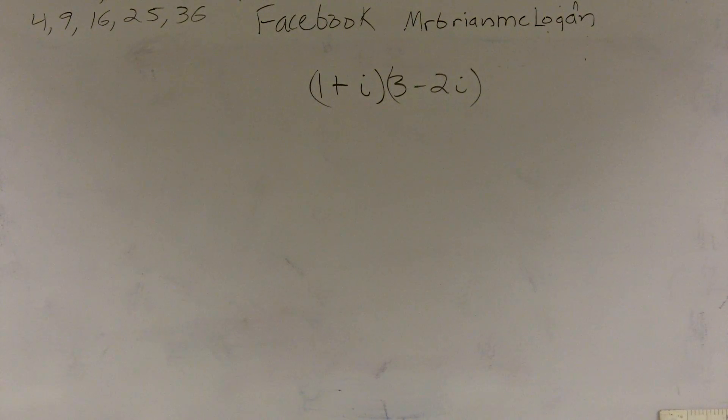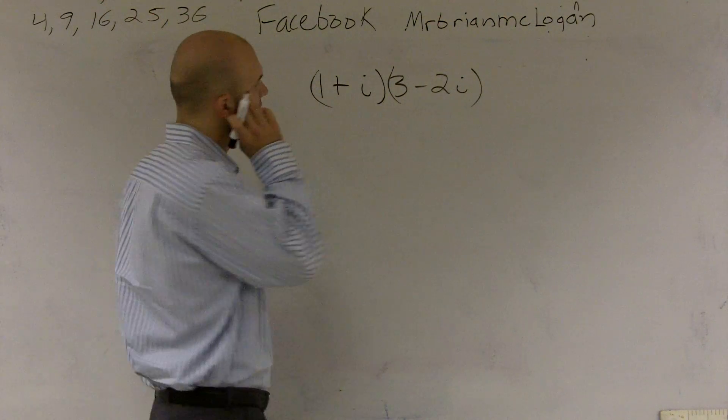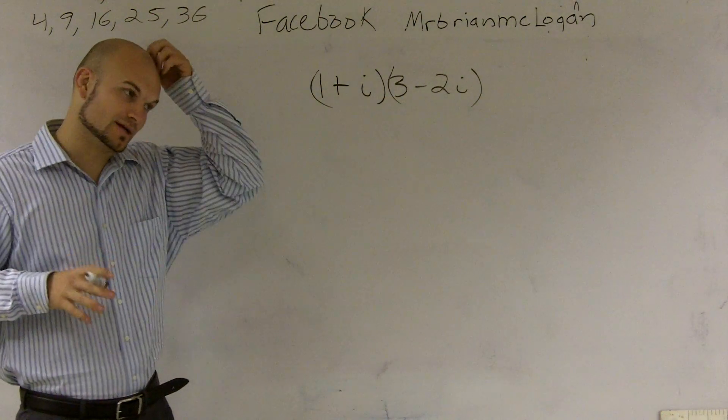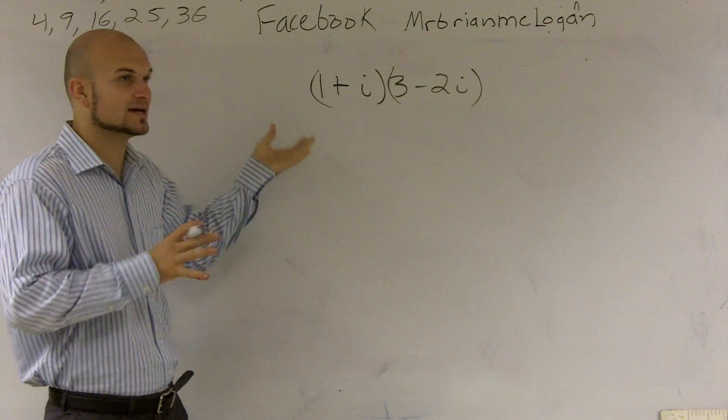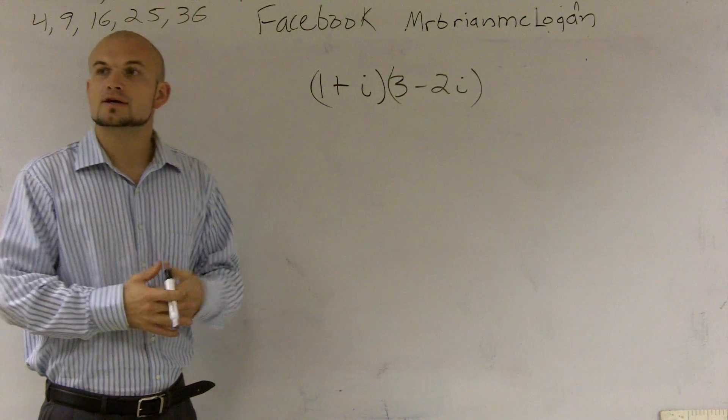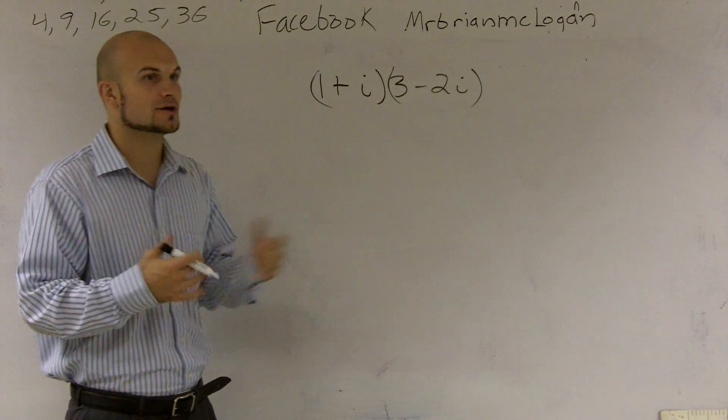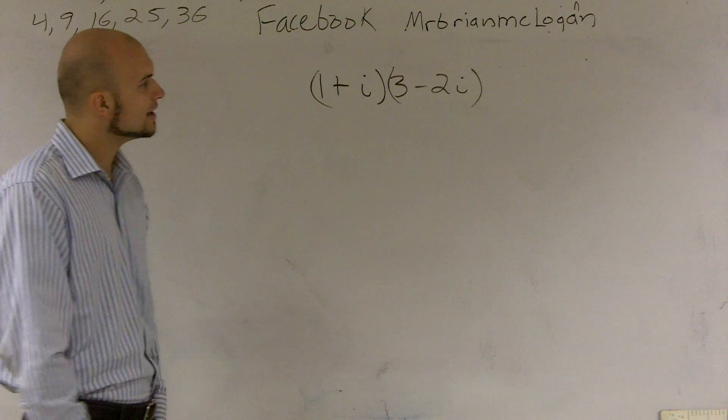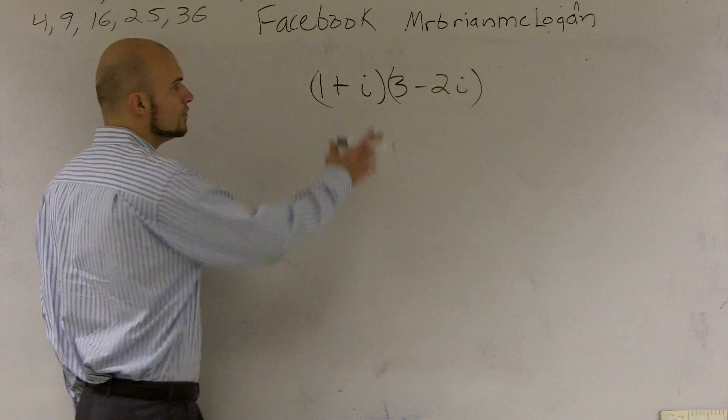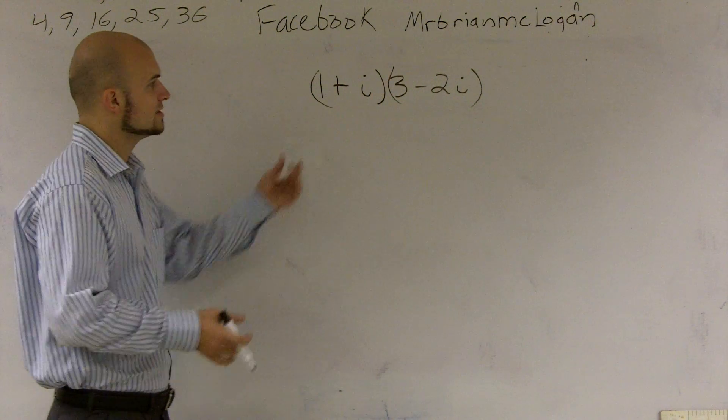This is called foiling binomials. So when I'm doing this problem, the way I'm going to describe this is a lot of you guys kind of get mixed up with foiling. So the other way I'll do this is I'll show the box method. That's another common technique to show how to foil or to multiply two binomials.